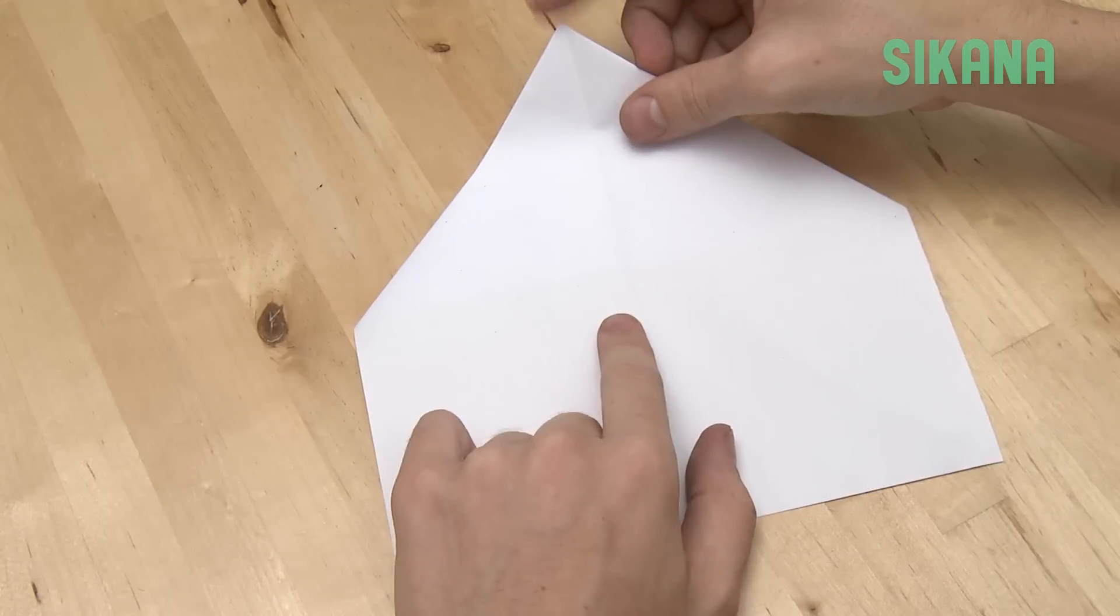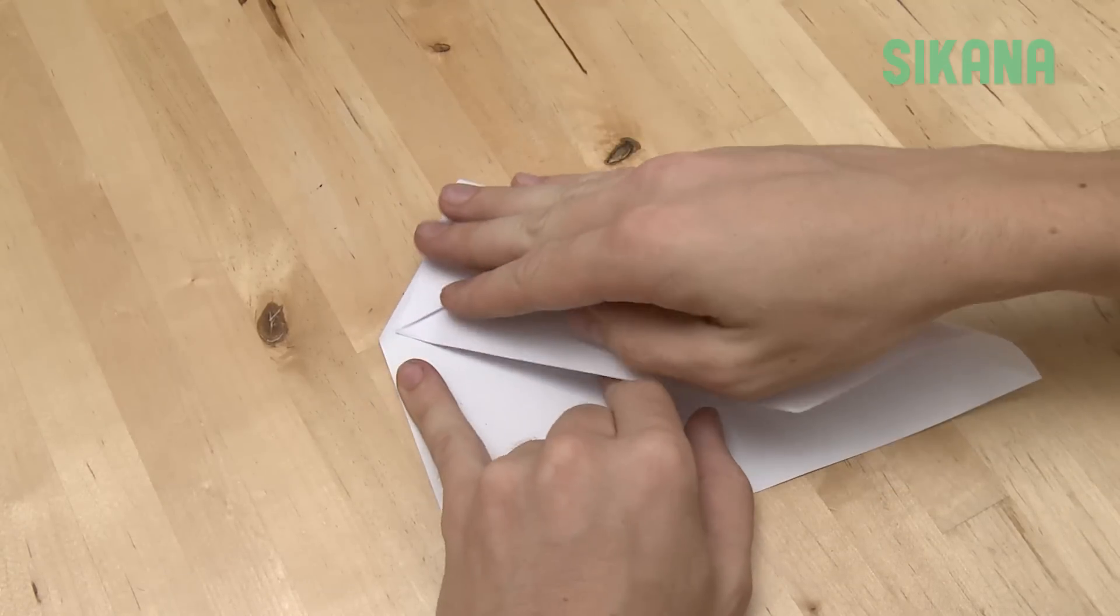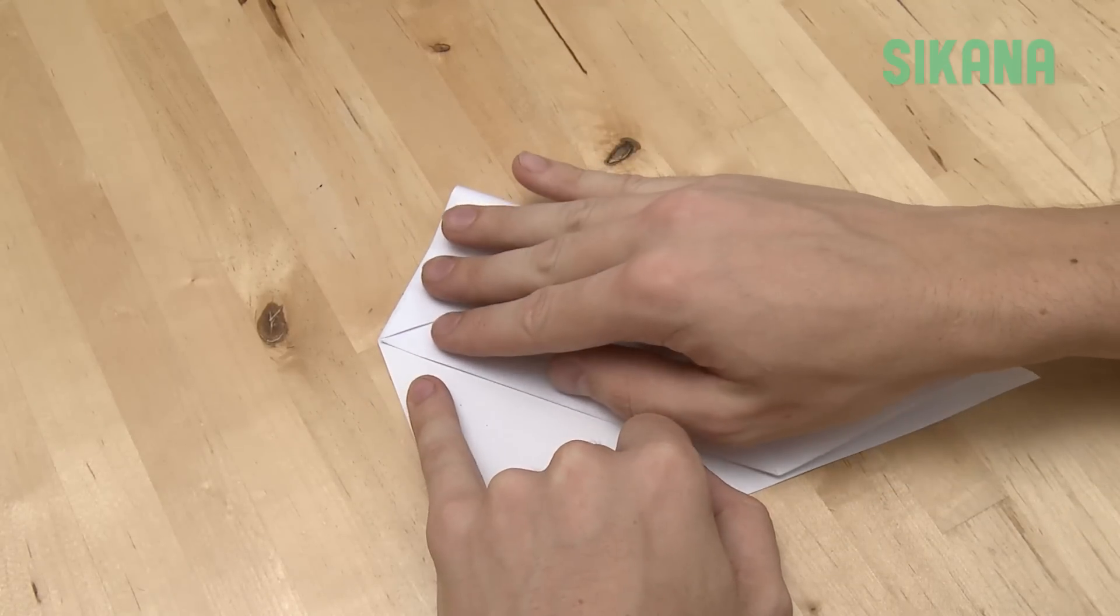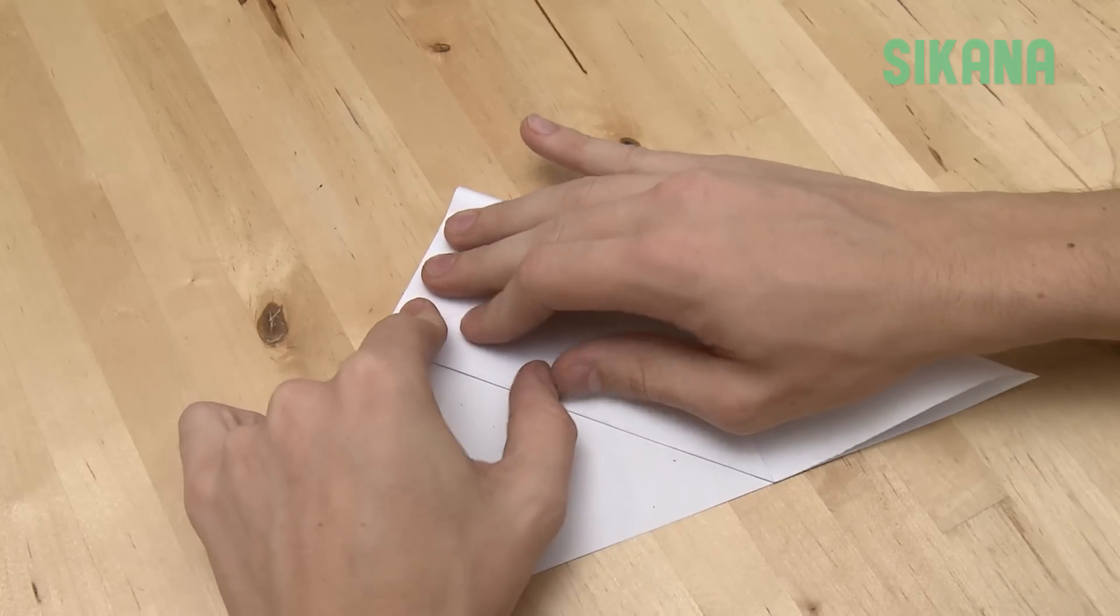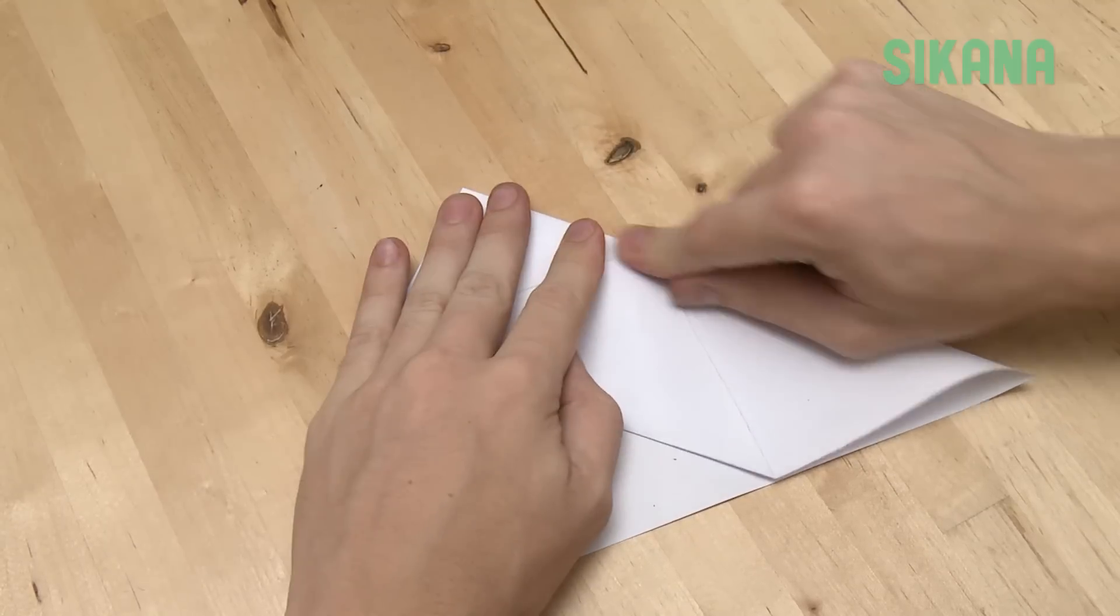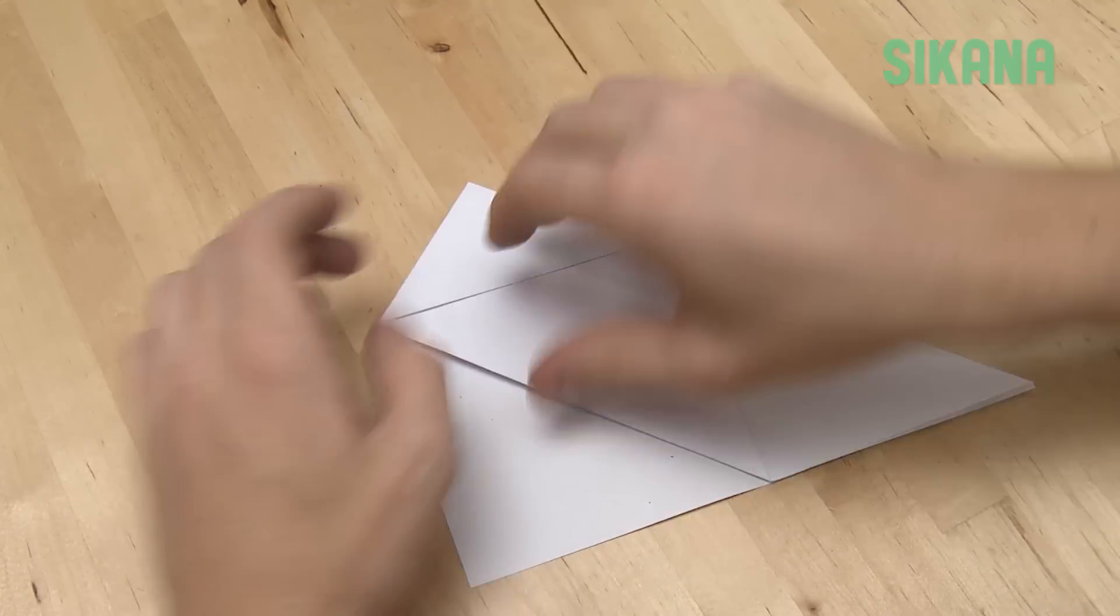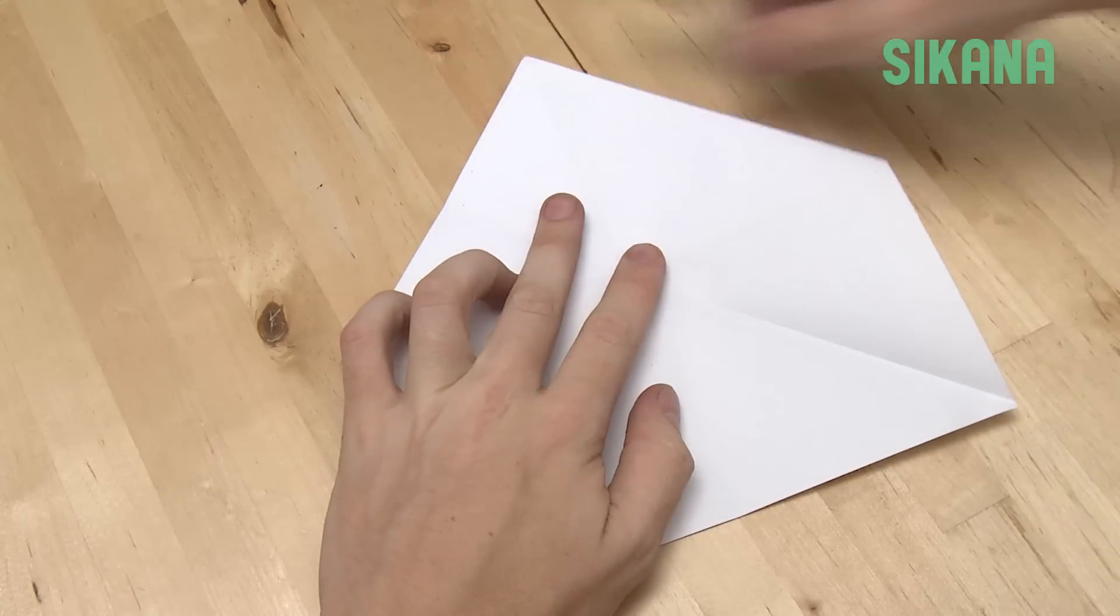Now fold this point like this. Crease it well here. Open it, then repeat for the other side.